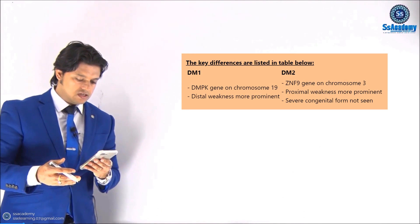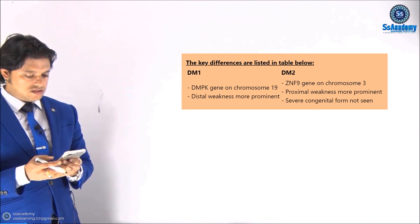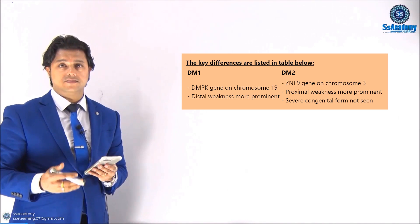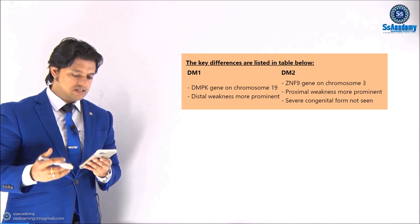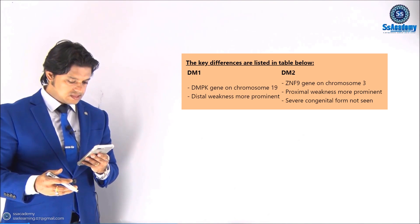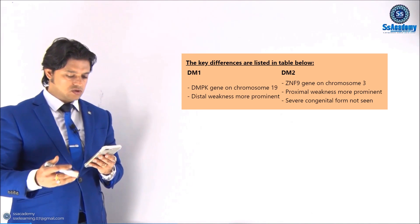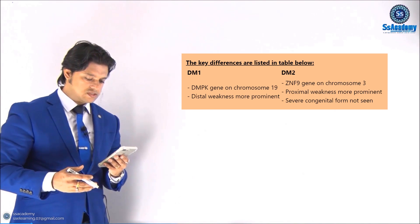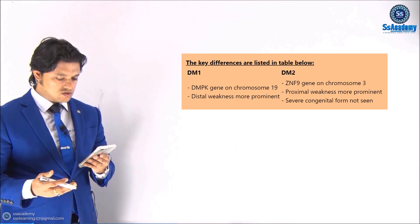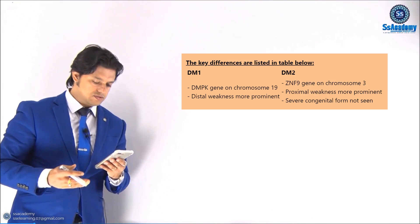The key differences are listed in the table below. DM1 involves the DMPK gene on chromosome 19, and DM2 involves ZNF9 on chromosome 3. DM1 presents with distal weakness most prominently. In contrast, DM2 presents with proximal weakness most prominently. The severe cognitive and congenital forms are not seen in DM2.